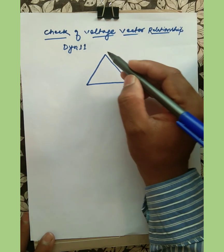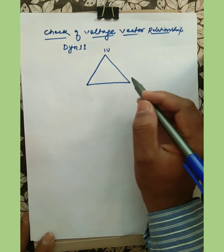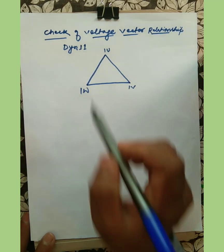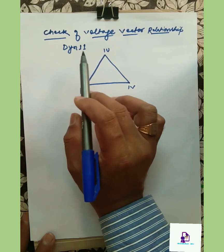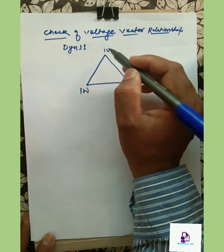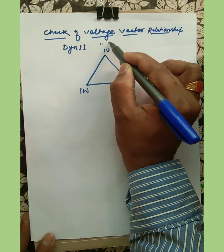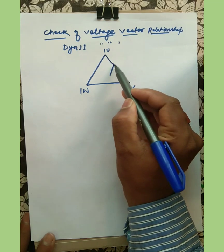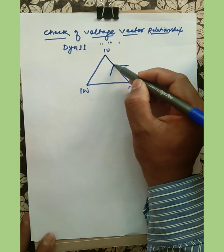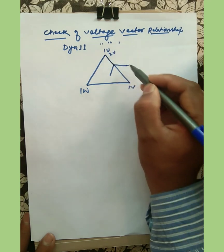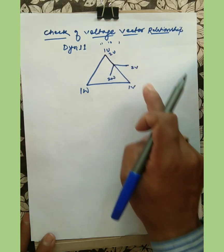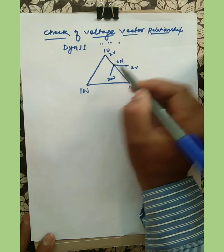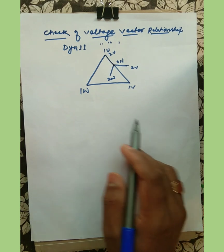This is the delta winding and we will write the notation as 1U, 1V, and 1W — this is the primary winding. We have a star connected secondary at an angle of 30 degrees, that is the 11 o'clock position. We notate the secondary as 2U, 2V, 2W, and 2N in anti-clockwise direction. '2' denotes the secondary side voltage and '1' denotes the primary side voltage.